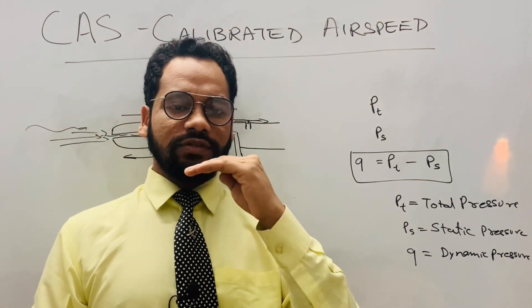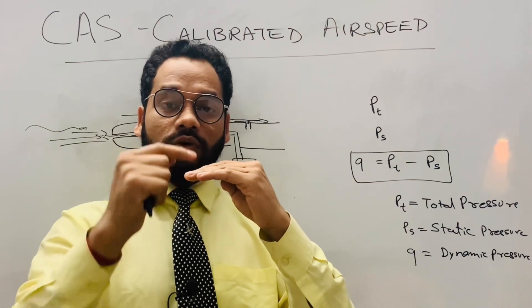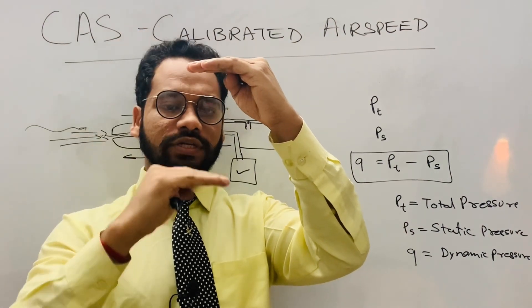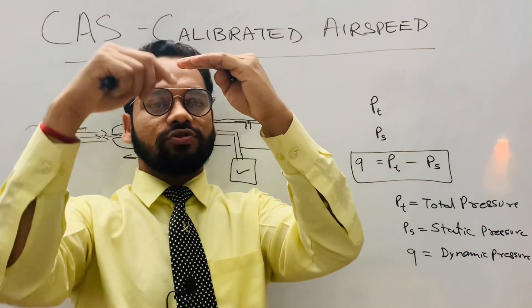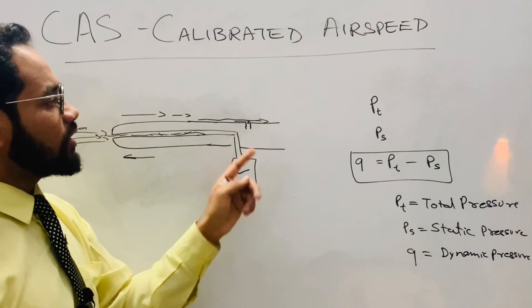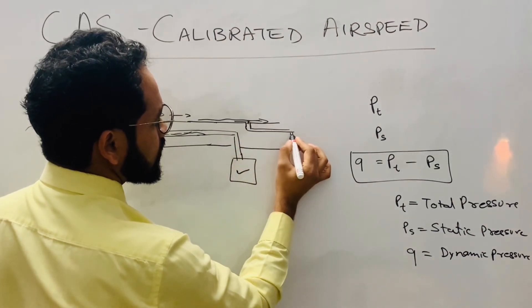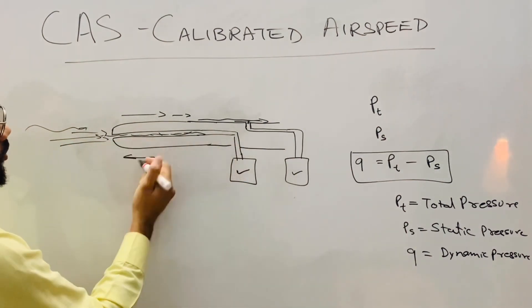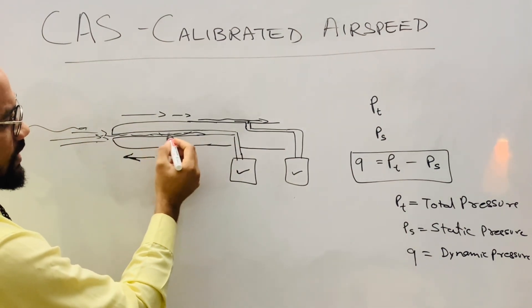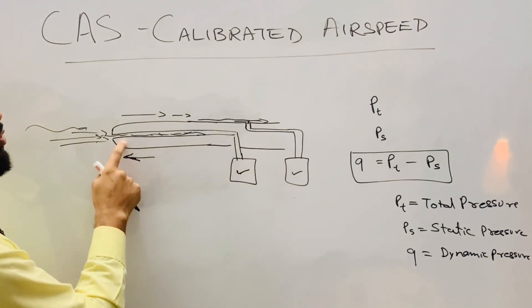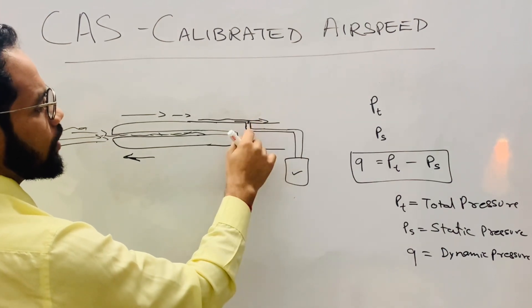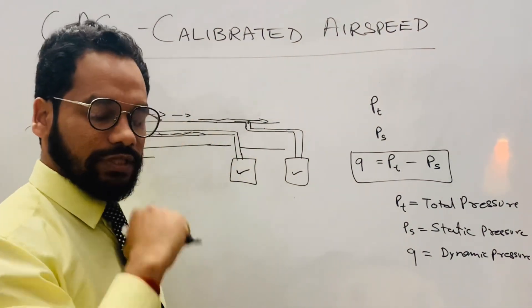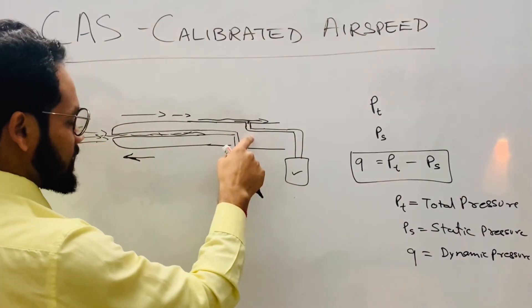Static pressure varies with altitude. Suppose the aircraft is at a certain altitude — the ambient pressure around the probe will be different compared to another altitude. So at different altitudes, the static pressure will be different. This is being sensed by the static probe, which gives it to another transducer.